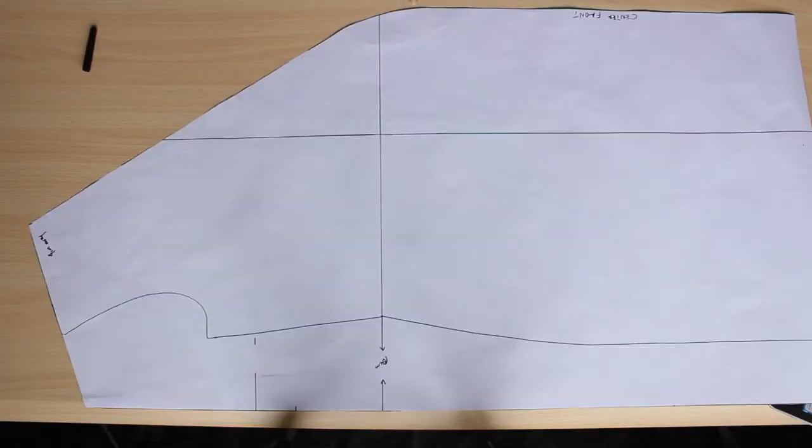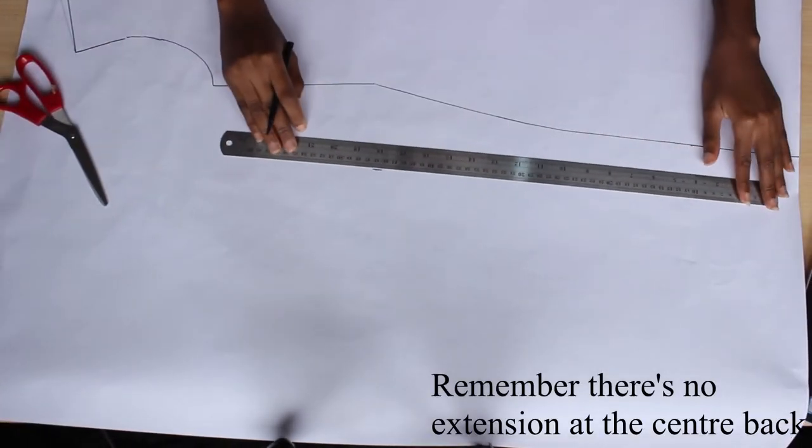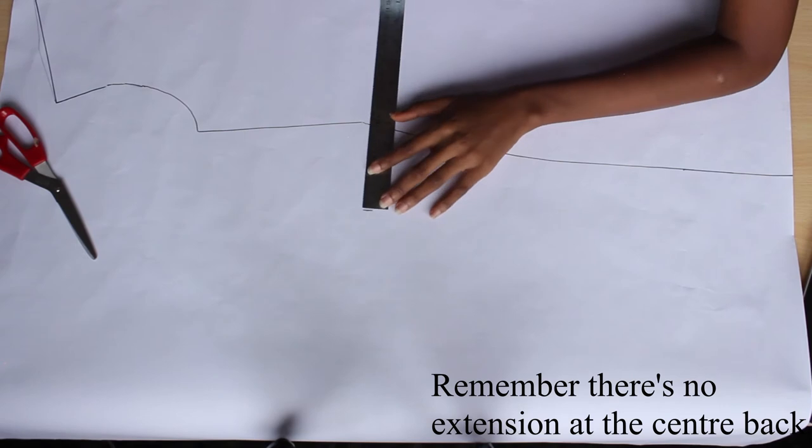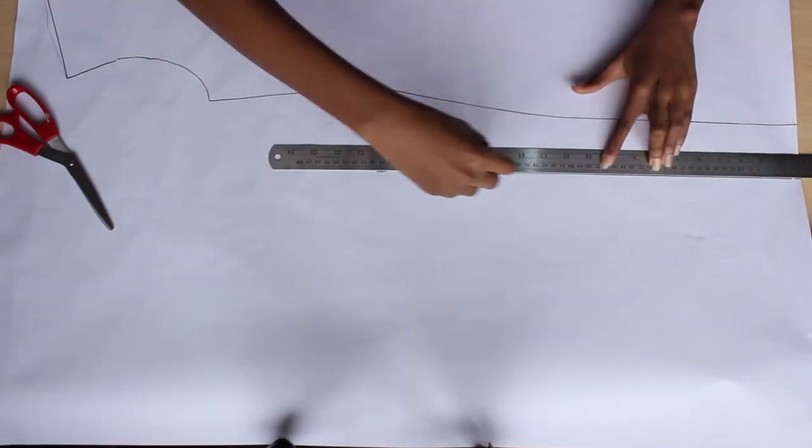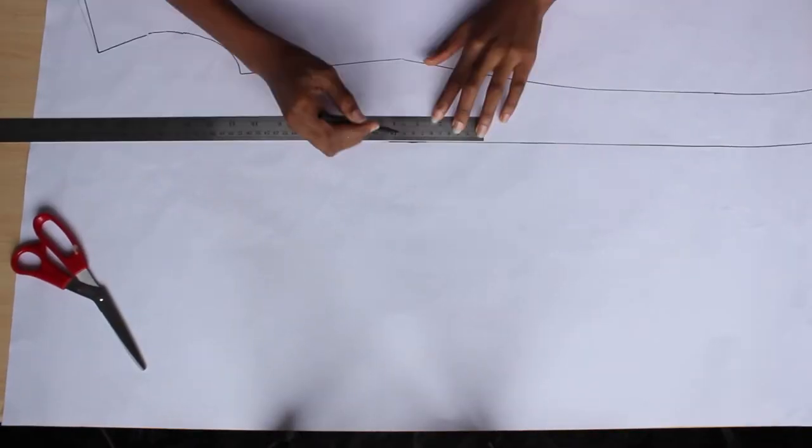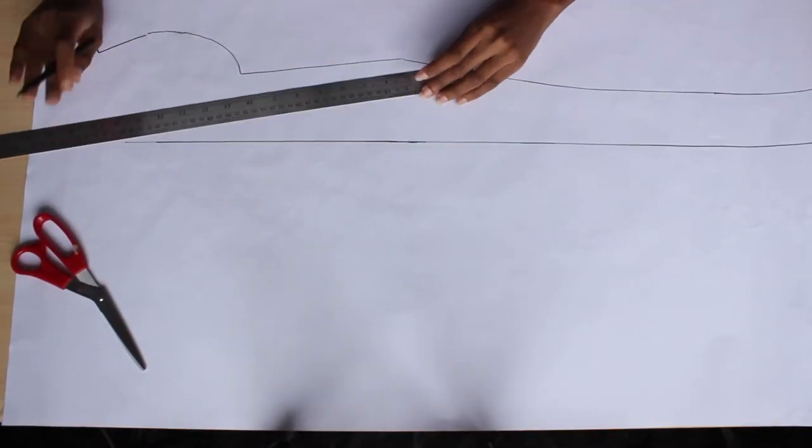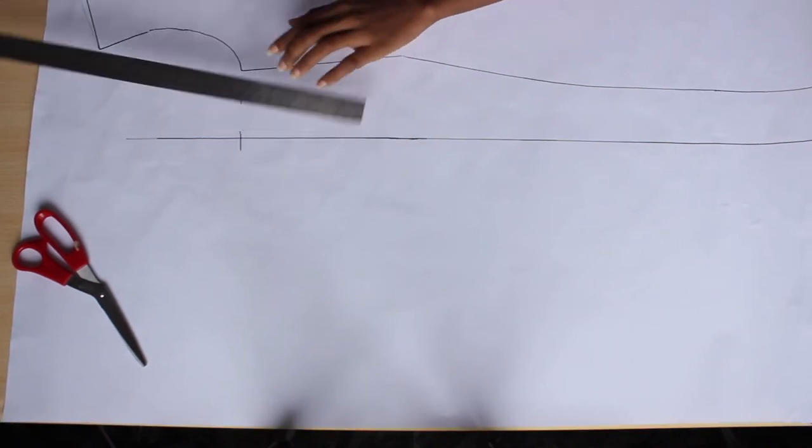This is what my front pattern looks like after I'm done drafting it. I'm going to repeat the very same thing at the back. Extend from the waist by about 10 cm, just square down and square up, and also go on to extend the shoulder and extend the armhole. By the way, I'm measuring 23 centimeters from my shoulder down to my armhole.